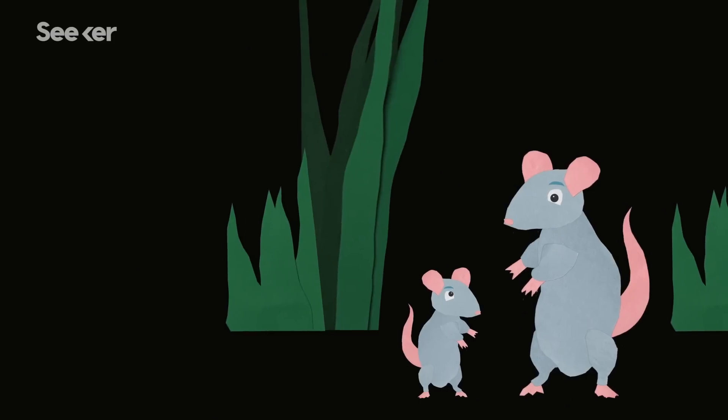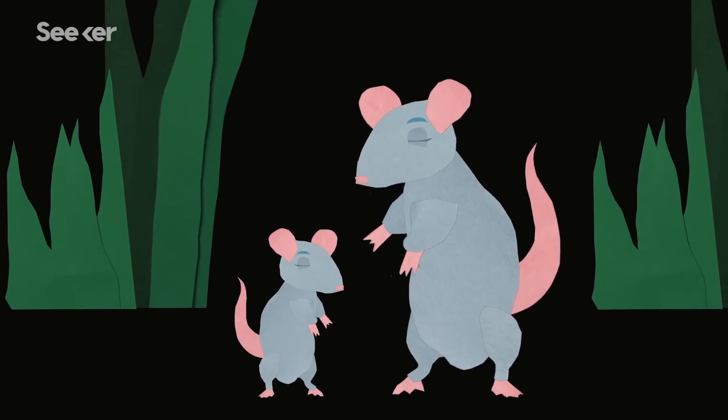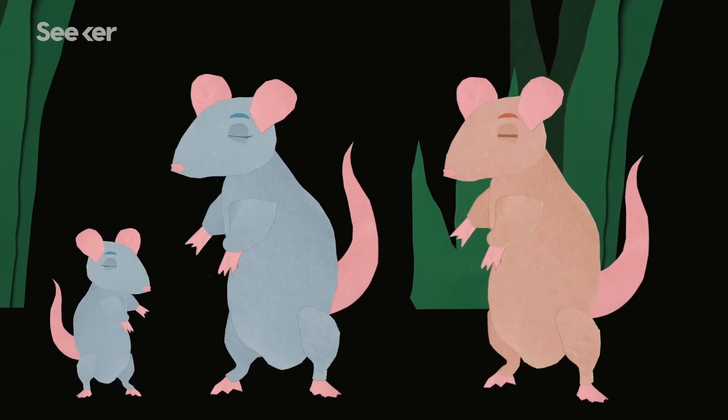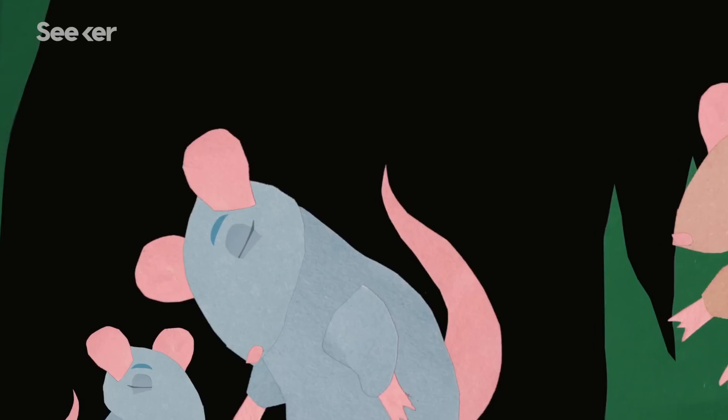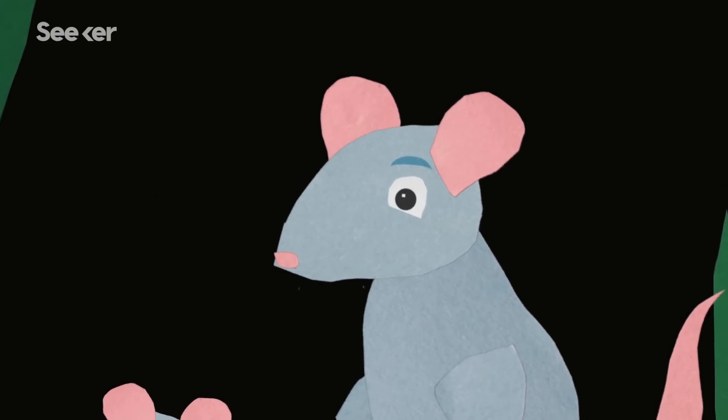As the female gives birth, the plug is also pushed out, and she is once again free to mate and be replugged again, and again, and again.